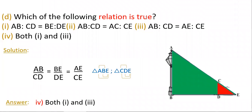Question D asks which of the following relations is true. Since these are similar triangles, corresponding side ratios are equal. You can write AB by CD equals BE by DE, or equivalently AE by CE — all are equal. Checking the options: AB by CD equals BE by DE — yes, correct. AC by CE — no, not correct. AB by CD equals AE by CE — yes, correct. So options 1 and 3 are correct, making option 4 (both 1 and 3) the right answer.